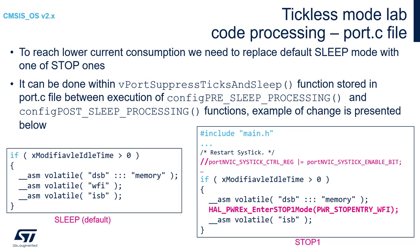At FreeRTOS we need to do some modifications within the vPortSuppressTicksAndSleep function in the port.c file. The change location is between execution of configPreSleepProcessing and configPostSleepProcessing macros. On the left side we can see the default configuration for sleep usage activated by the WFI instruction. On the right side there is a proposal to use Stop 1 mode instead. First, please include the main.h file at the beginning of port.c. Then comment out the line which restarts SysTick. Further, instead of the WFI call, please insert HAL_PWREx_EnterSTOP1Mode with WFI as the entry mode argument.